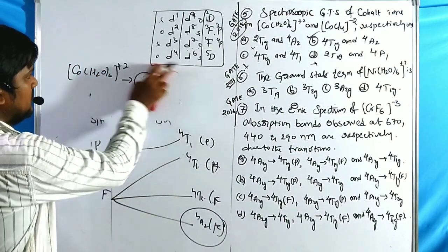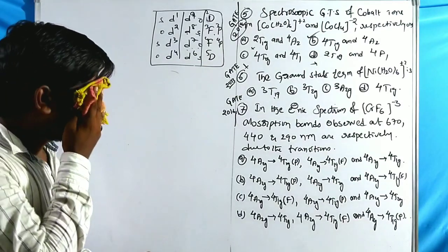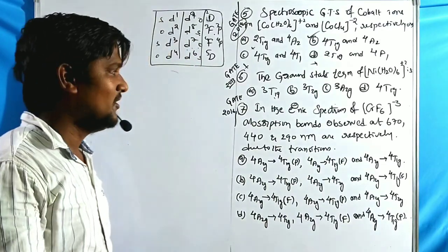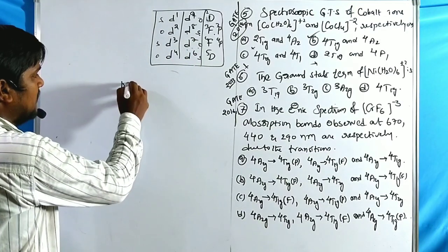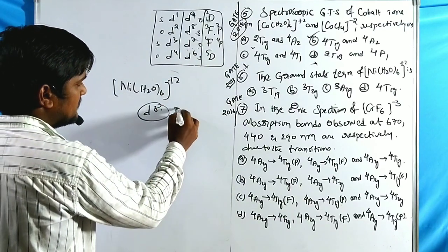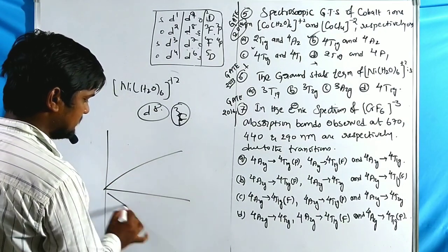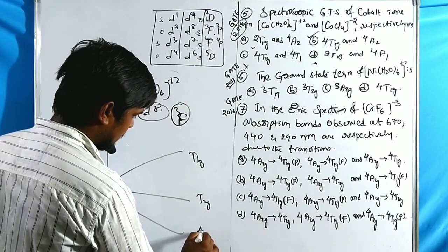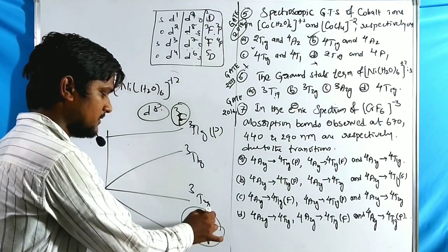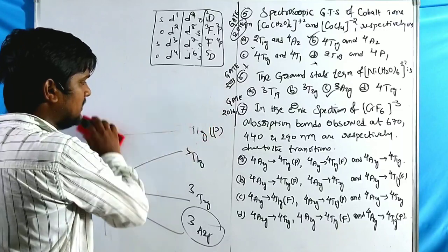Problem 6: Ground term symbol of Ni(H₂O)₆²⁺. Ni²⁺ is d8, which is similar to octahedral f-term splitting — full inversion takes place. The diagram gives t₁g, t₂g, a₂g with spin multiplicity 3. The p-term has multiplicity 3. The ground term symbol is ³A₂g. Option C is correct.